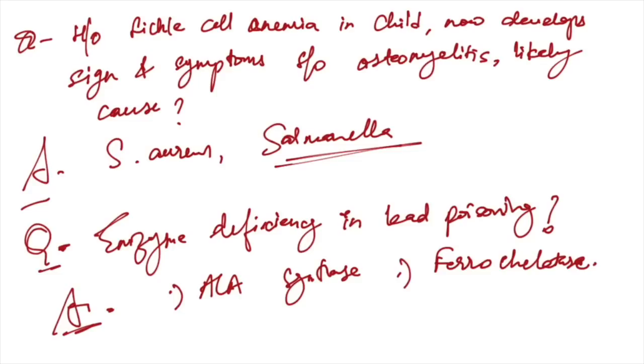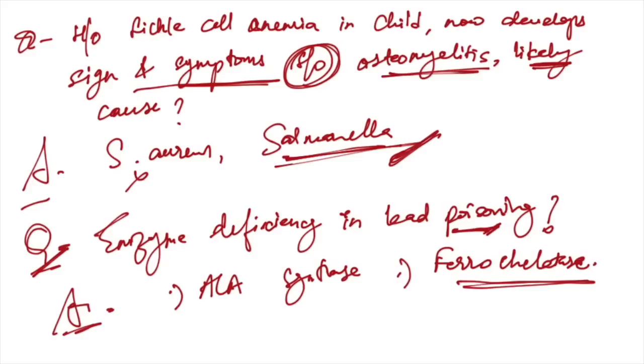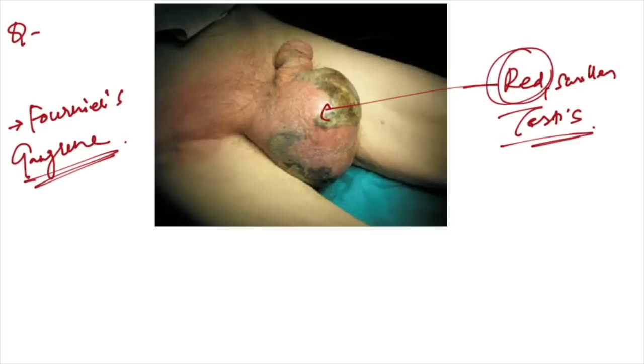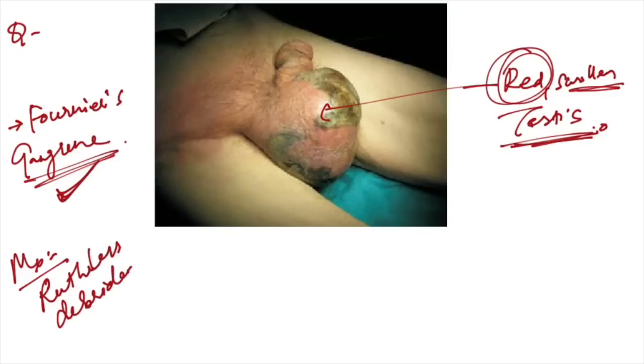History of sickle cell anemia in child developing signs and symptoms suggestive of osteomyelitis. The likely cause is Salmonella, not Staphylococcus aureus. Enzyme deficiency in lead poisoning is ferrochelatase, not ALA synthetase. This diagram was given showing red swollen testes with acute pain - this is Fournier's gangrene. Management is ruthless debridement to expose both testes.